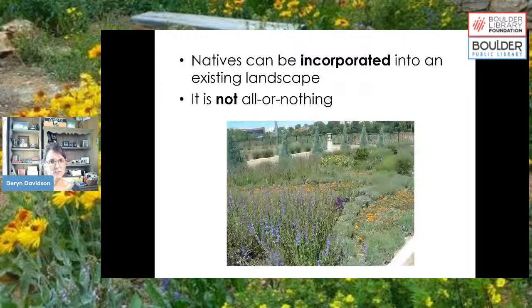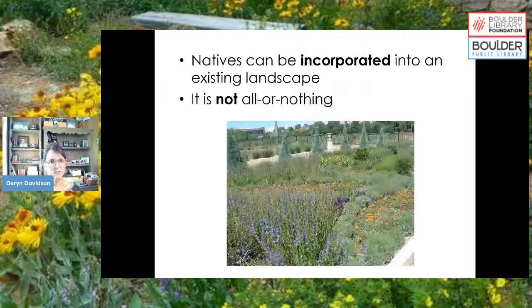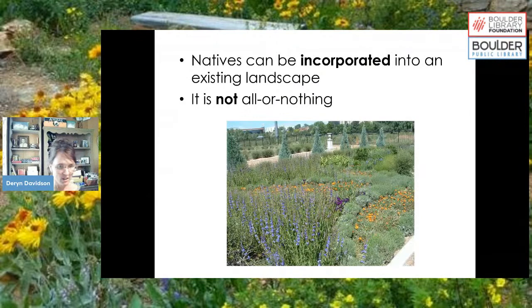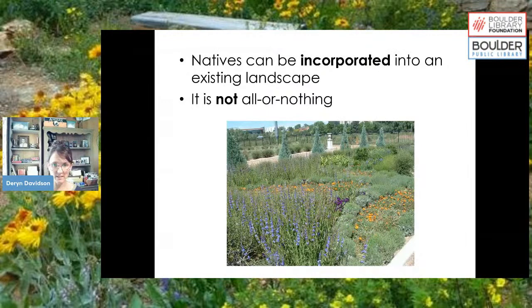It's important to know that if you're new to gardening with native plants, they can be incorporated into an existing landscape — it is not an all-or-nothing situation. Sometimes people get intimidated and think, 'I don't have a single native plant, what do I do?' As things die off and need to be replaced, you can choose a native plant as the replacement, or if you're redoing a whole area of your yard, that's where you can choose native plants.